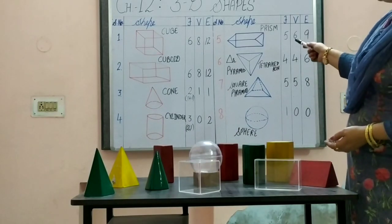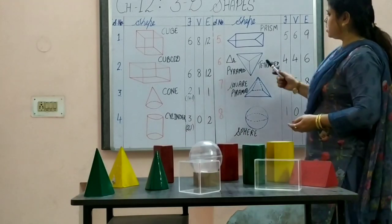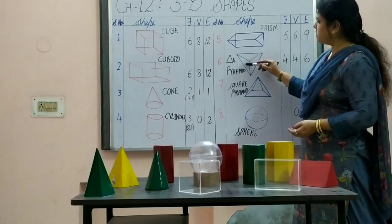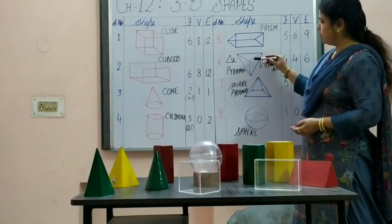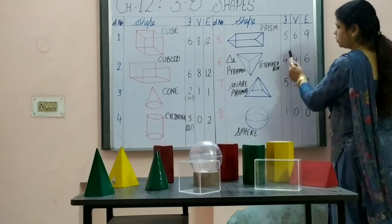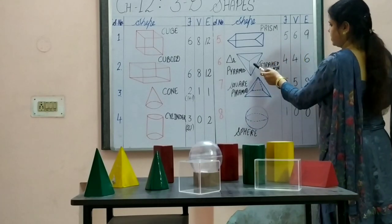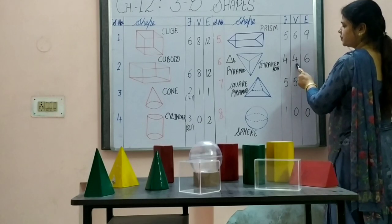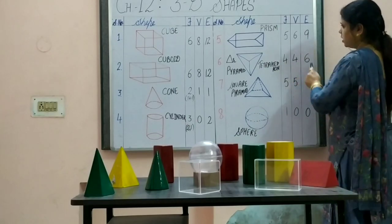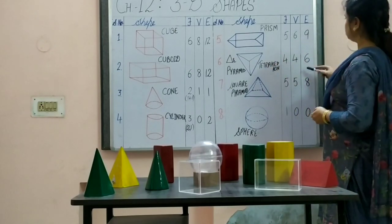Next one is a tetrahedron. A tetrahedron is a pyramid whose base is an equilateral triangle and its other three faces are also triangular. So how many faces are there in a triangular pyramid? There are total four faces: one triangular base and three lateral triangular faces. How many vertices? Three at the bottom and one at the top — total four vertices. And how many edges? Three on the base and three lateral edges — total six edges.